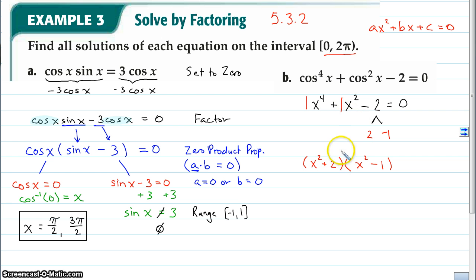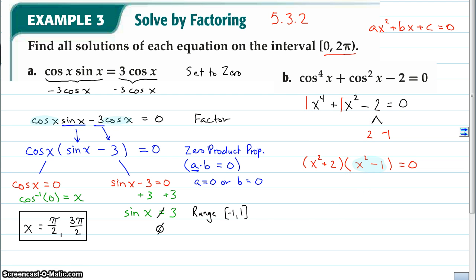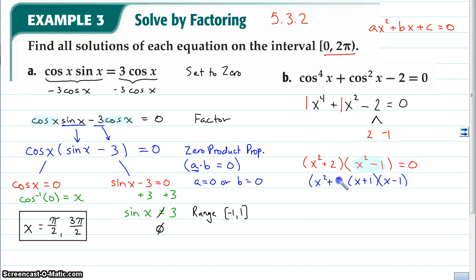The expression x² − 1 is a difference of squares — both terms are perfect squares being subtracted — so it factors into (x + 1)(x − 1). The expression x² + 2 is a sum, so we can't factor it further; we leave it as x² + 2. Now that we've completely factored, we replace all x's back with cosine x, giving us (cos²x + 2)(cos x + 1)(cos x − 1) = 0.